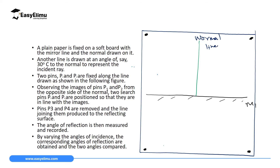Take your protractor and measure an angle of 30 degrees from the normal, then draw a line at that angle of 30 degrees — this will be your incident ray, directed towards the mirror line. Then take two optical pins: fix Pin 1 and Pin 2 along that incident ray line, about two centimeters apart.